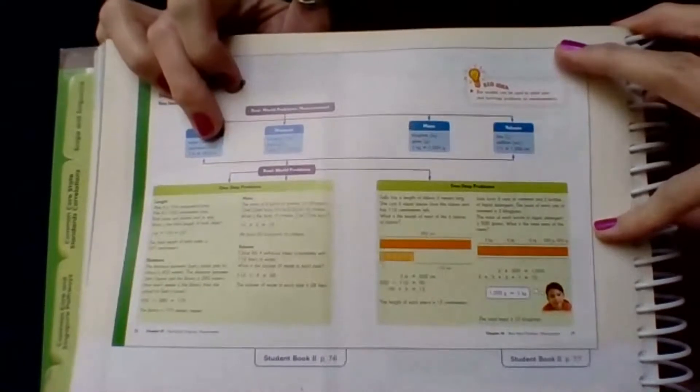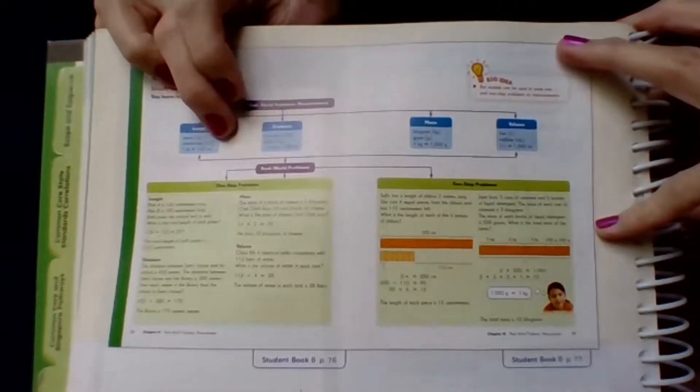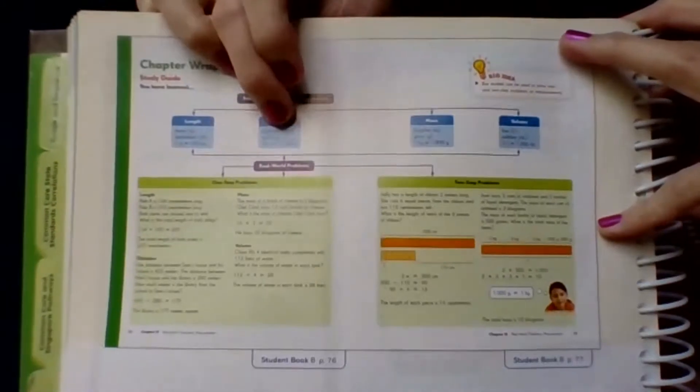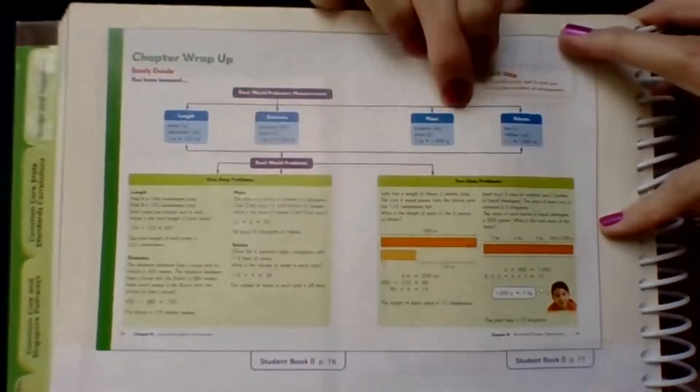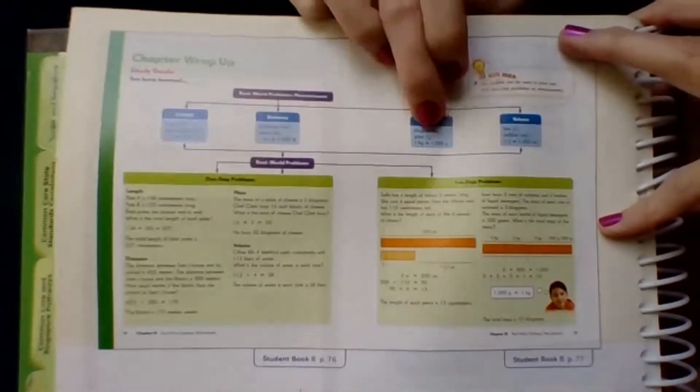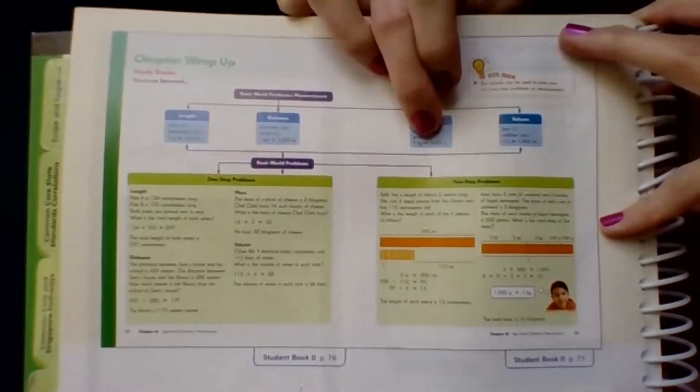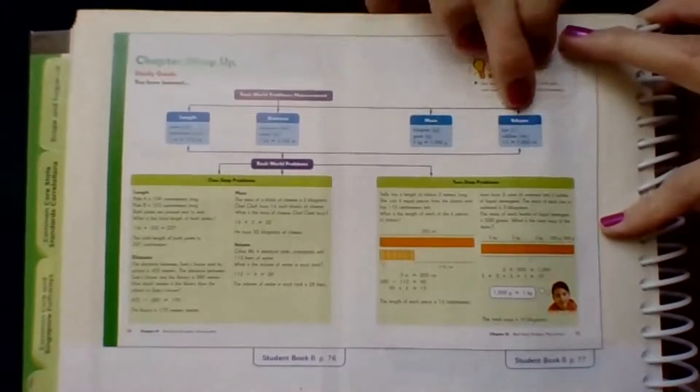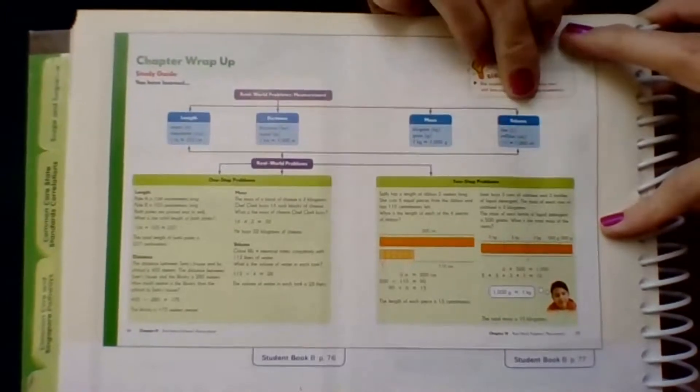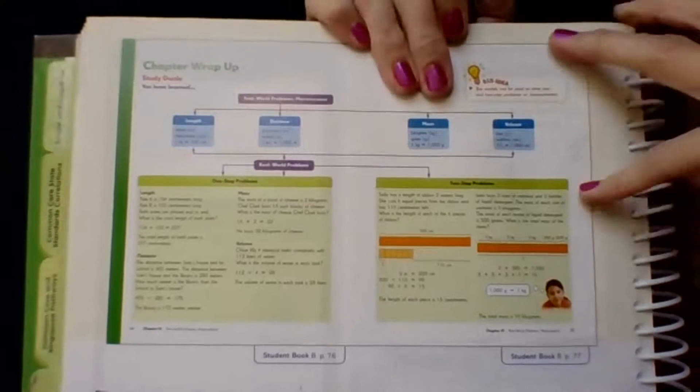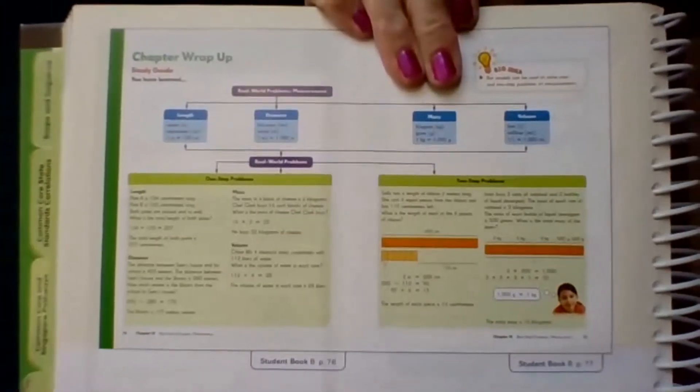Remember, this is real world problems measurement. There's length that we talked about, meters and centimeters. One meter equals a hundred centimeters. Distances, kilometers and meters. One kilometer equals a thousand meters. Mass, kilograms and grams. One kilogram equals a thousand grams. And volume, liters and milliliters. One liter equals a thousand milliliters.